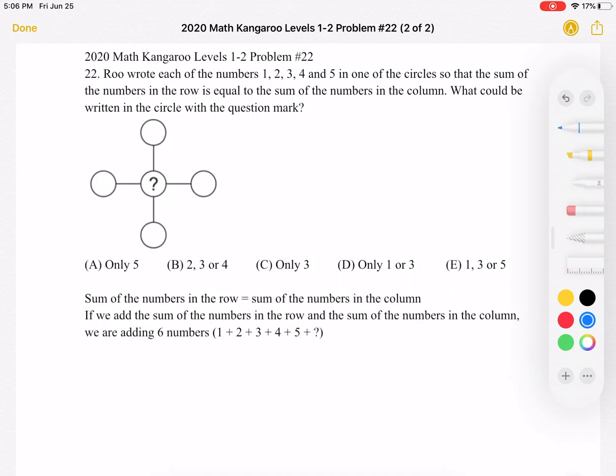So if we add the sum of the numbers in the row, so that's this number, this number, and this number, plus the sum of the numbers in the column, so that's this number, this number, and this number, we're adding together six numbers.